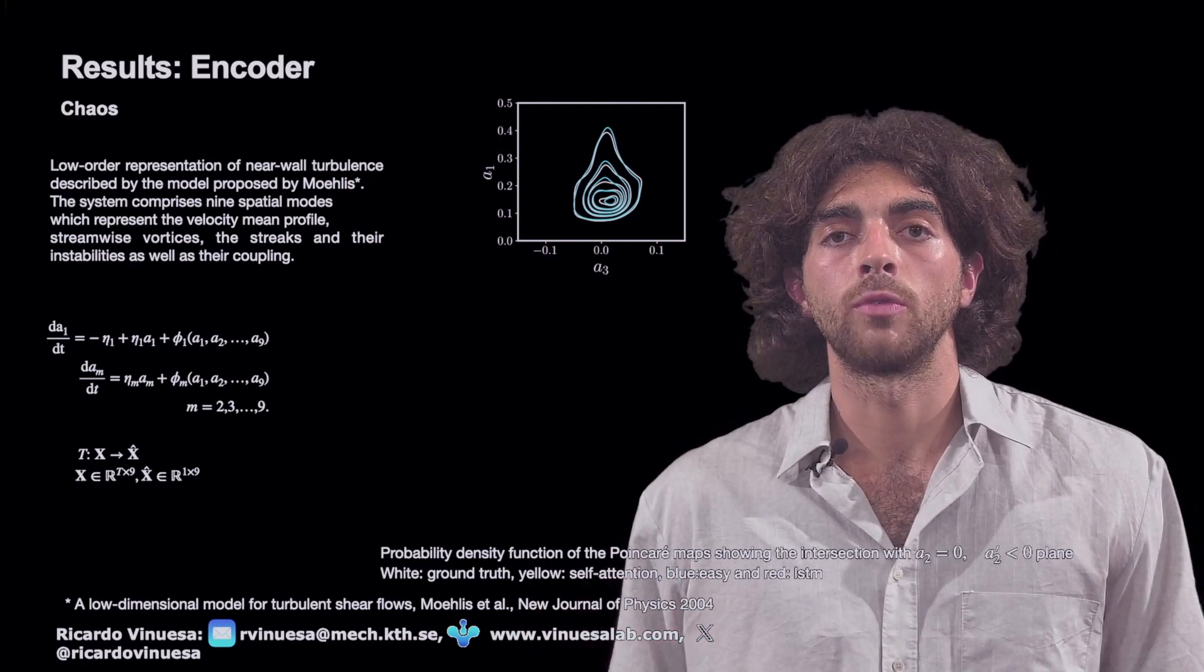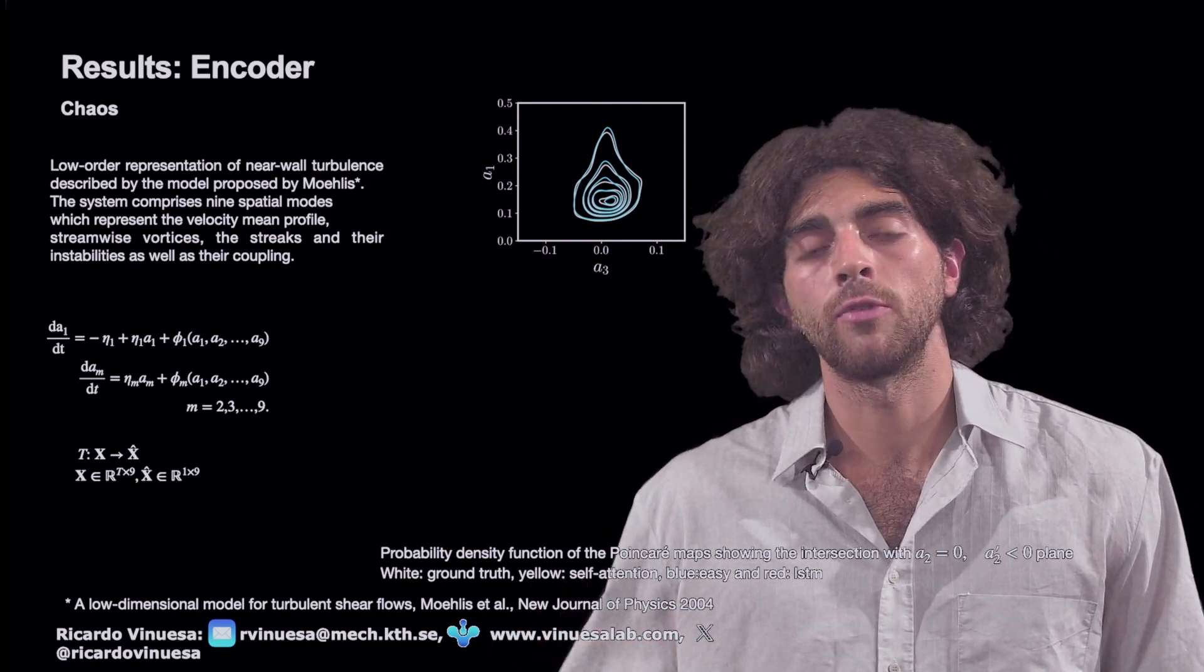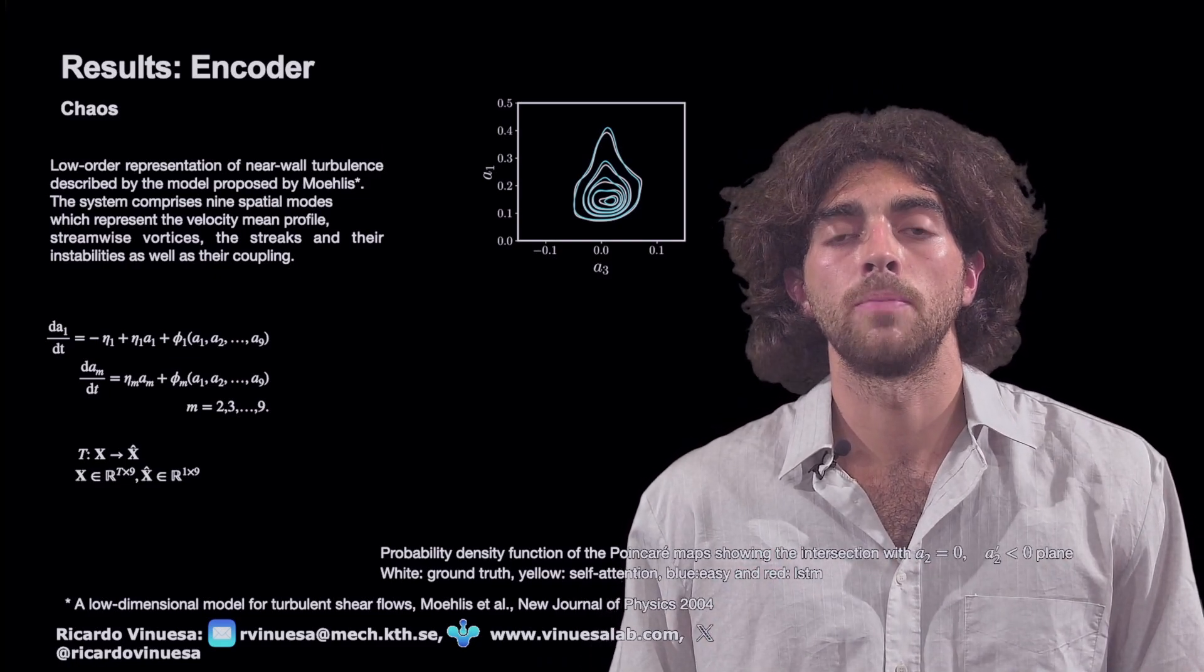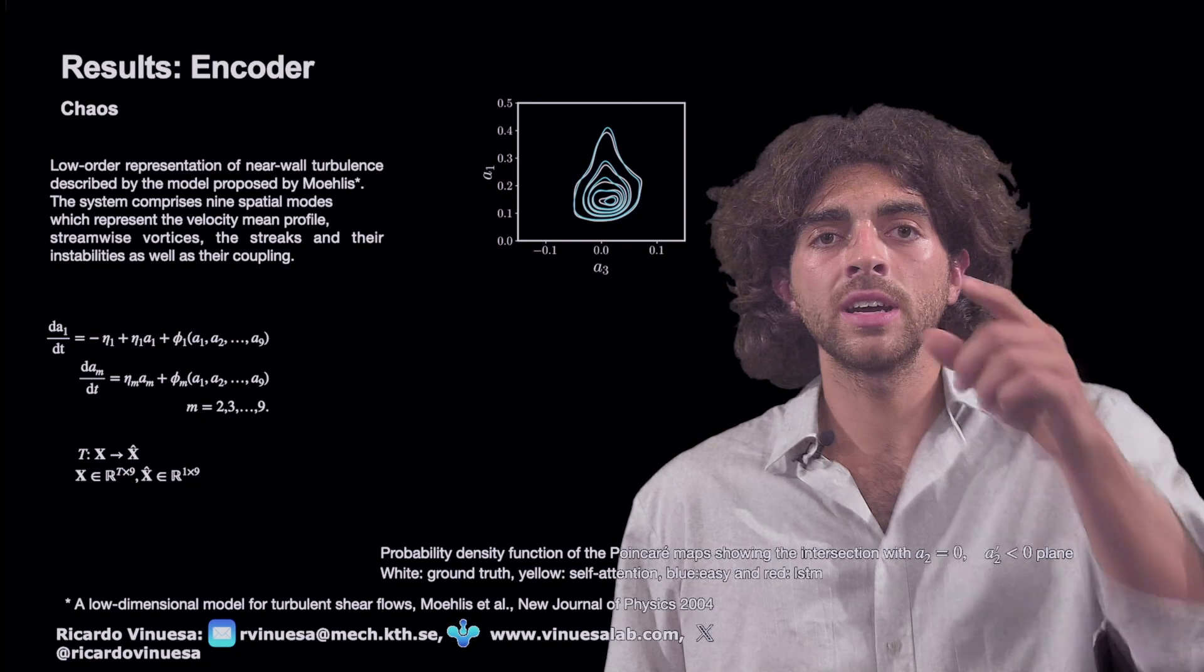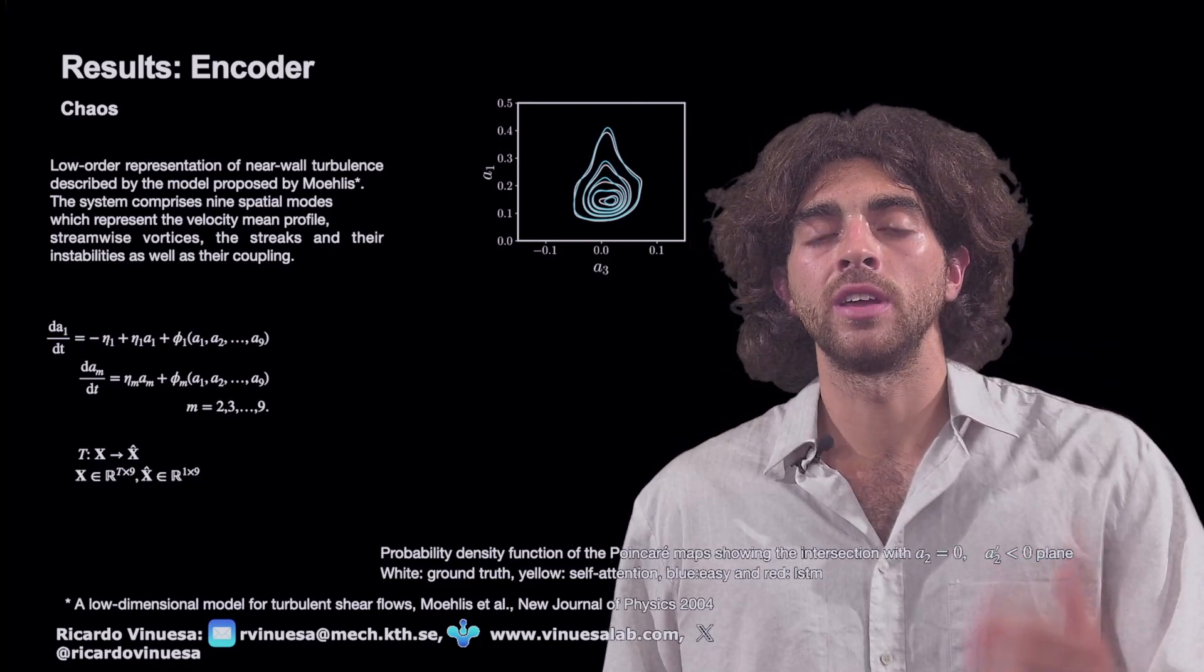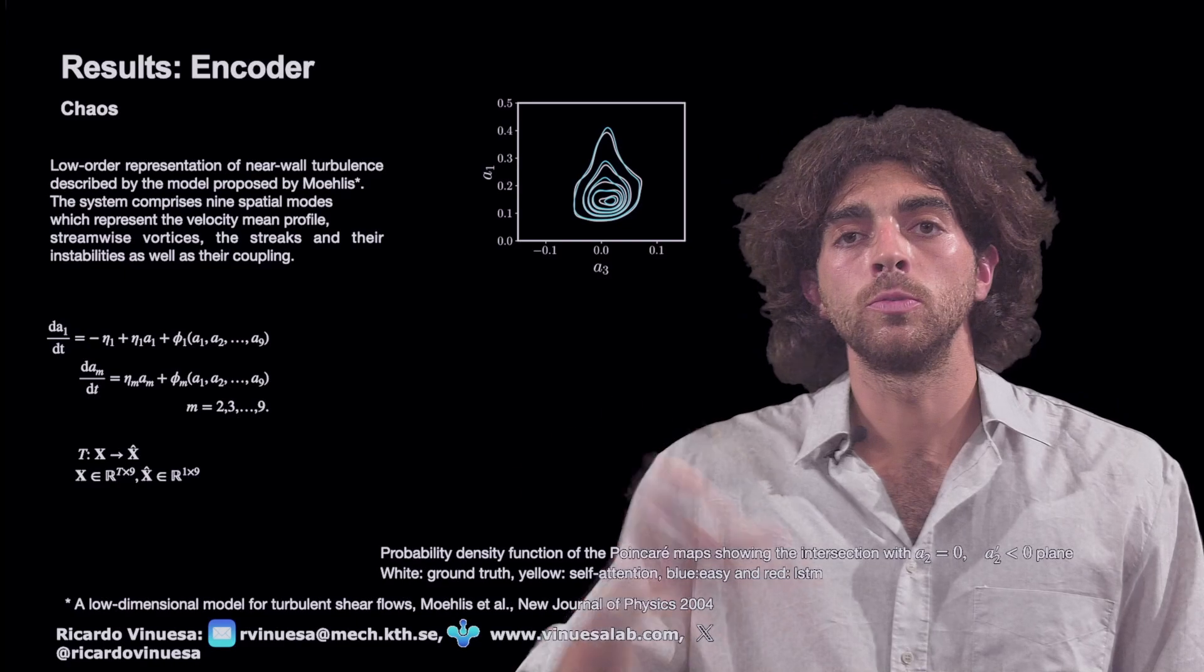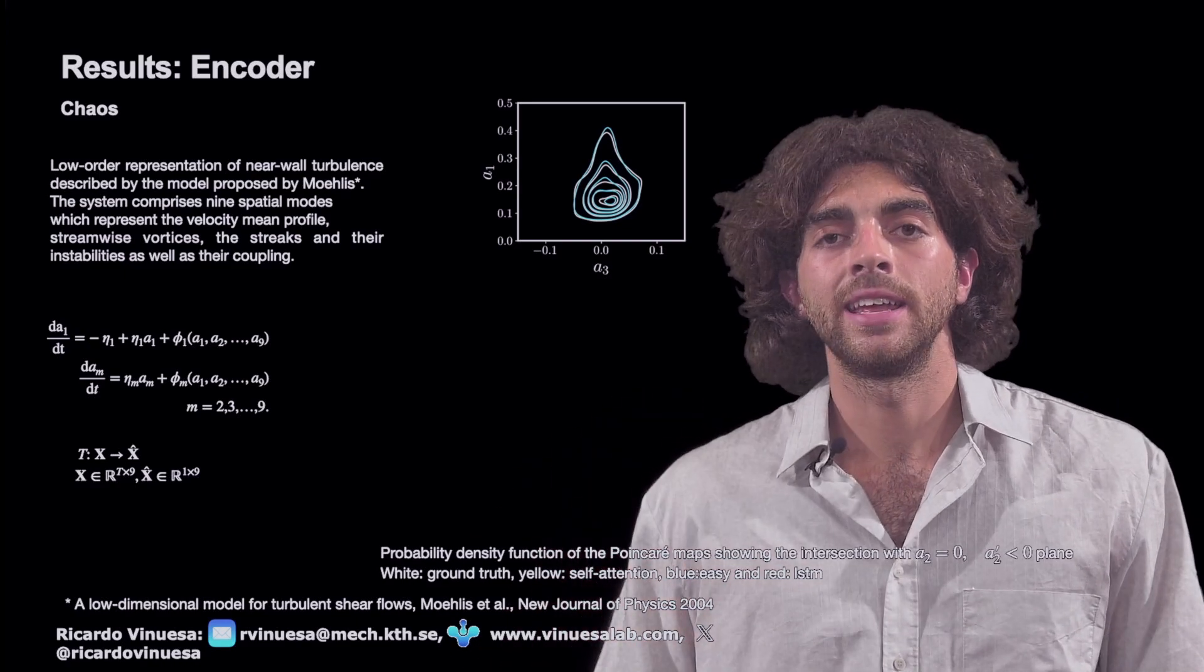We will see how these different attention mechanisms with the same encoder perform with different metrics. We will take into account the original Reynolds stresses, and more strict metrics, such as the Poincaré maps. The output of the encoder is only one step. So we are inputting a matrix, and we will output a vector, but retaining still the nine features.